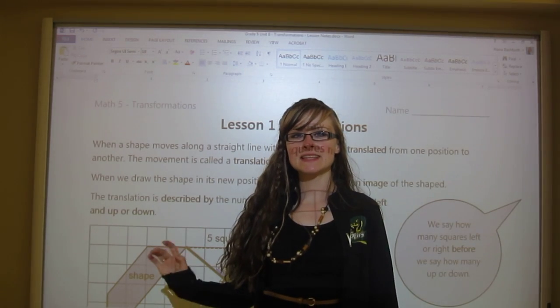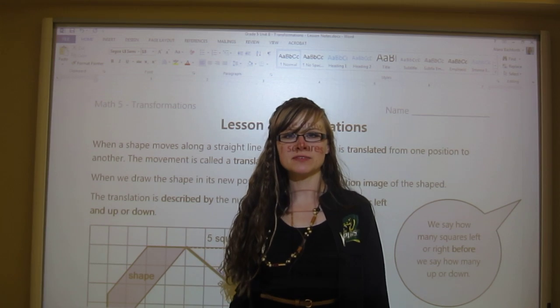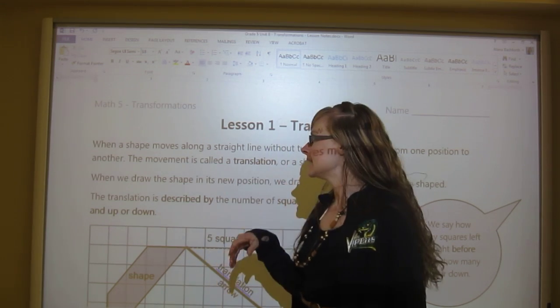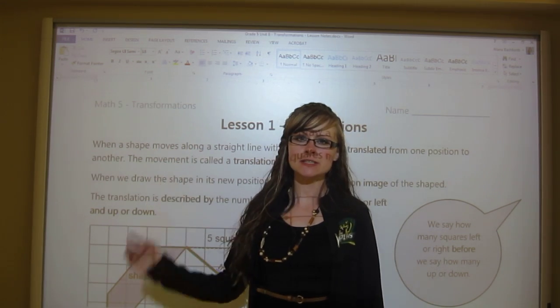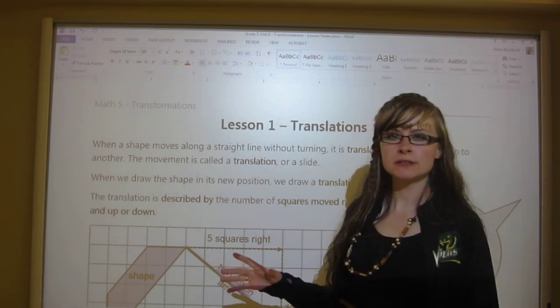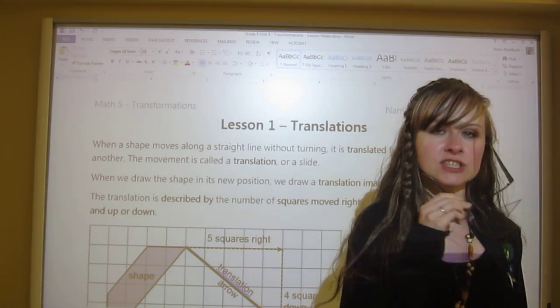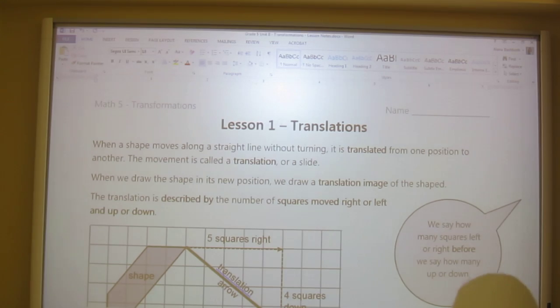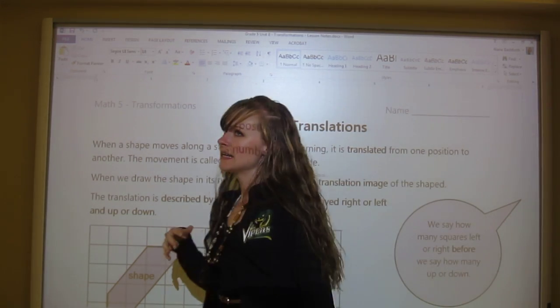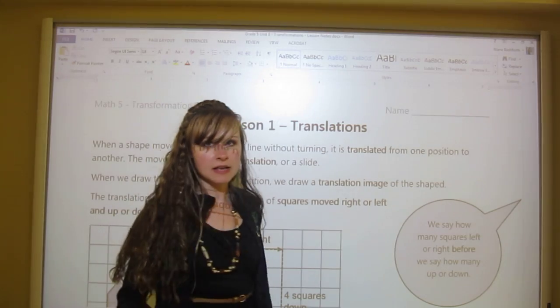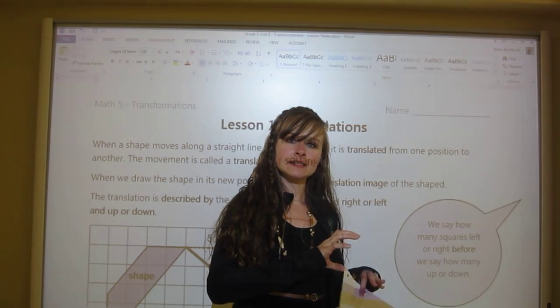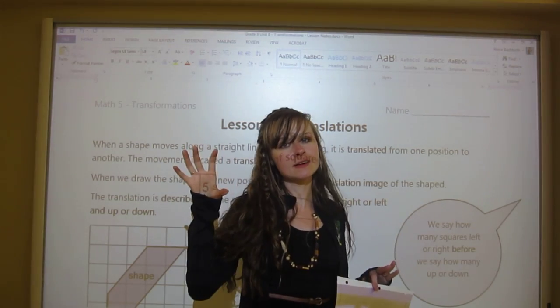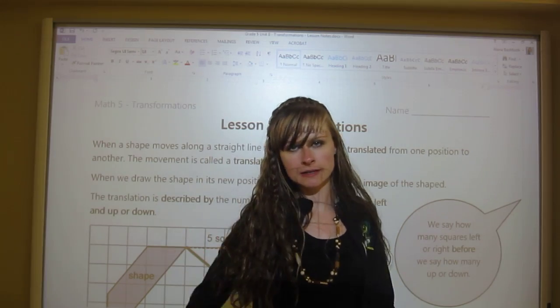Hello, this is the last unit of the grade 5 math and it is called transformations. Basically what we're going to be looking at is the way that shapes move. The first way that shapes can move is called a translation. What a translation basically is, is just moving from one spot to another and not turning or rotating or anything.